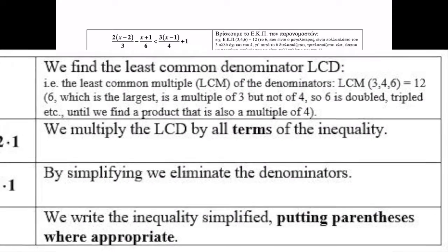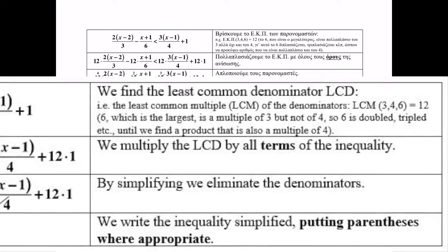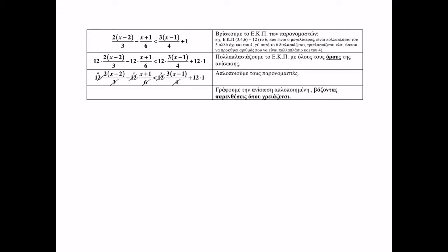Then, we write the inequality simplified, putting parentheses where needed. In the numerator of the first fraction, we had one term, a product of 2 times a parenthesis, so we don't need to put another parenthesis. So, we just write 4 times 2 times the parenthesis, so straight 8 times the parenthesis.